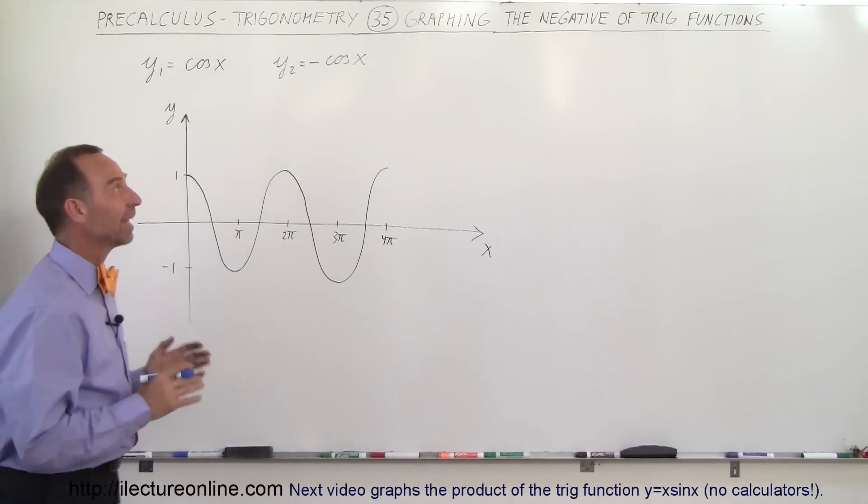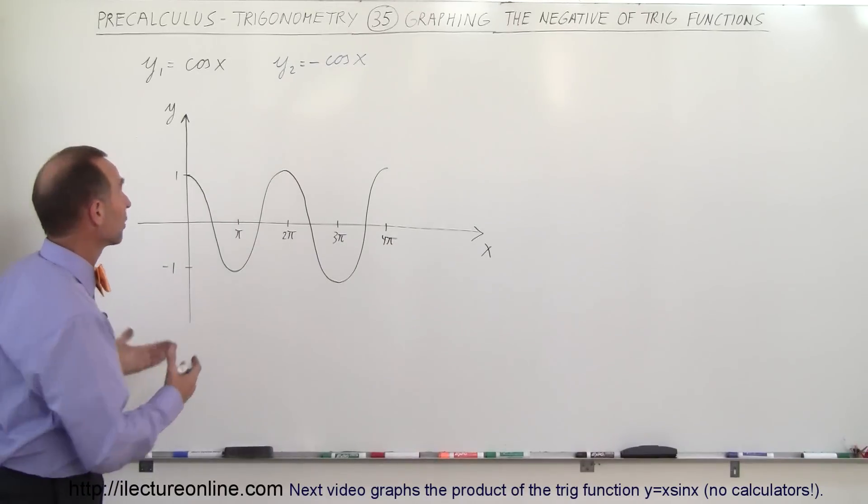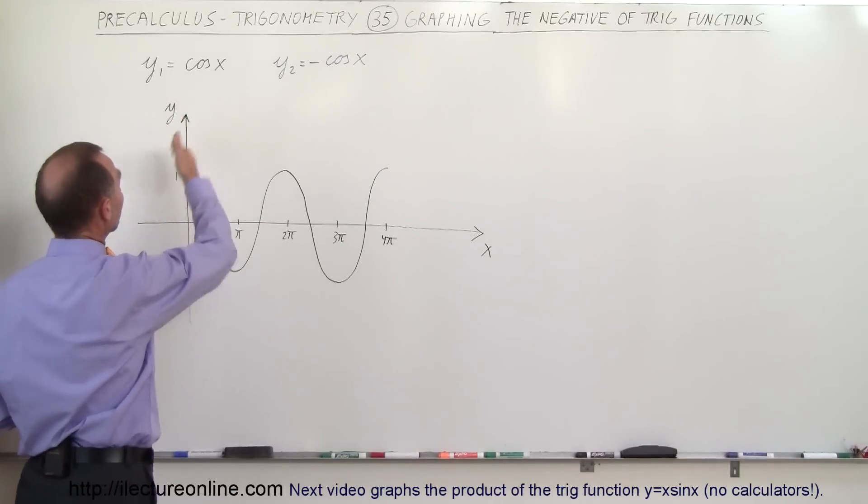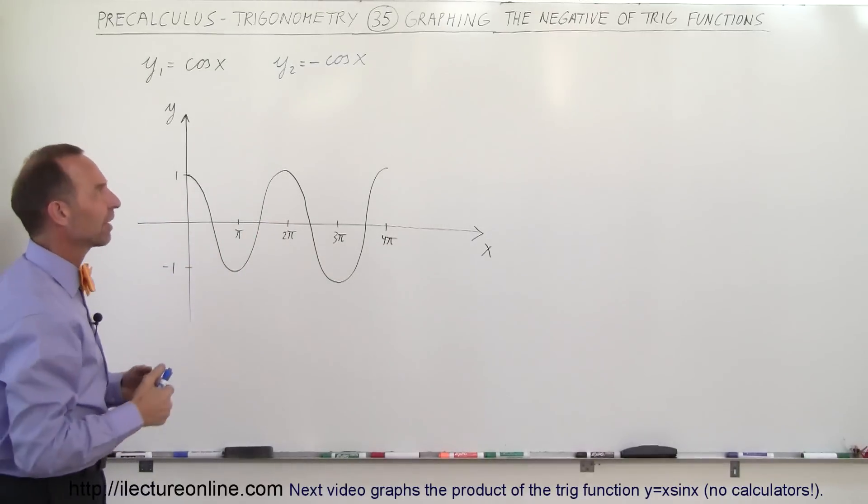Welcome to iLecture Online. Now we're going to show you how to graph the negative of a trigonometric function. Here we have a simple function y1 equals the cosine of x, and I'm asking you to graph the negative cosine of x.